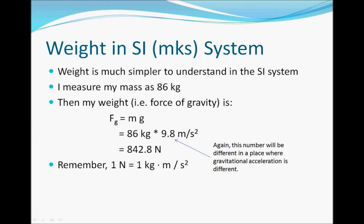In the SI, everything is a bit simpler, partly because it uses kilograms for mass and newtons for weight, which makes it easier to keep them separate rather than using the same word for both. If I measure my mass as 86 kilograms, I simply multiply by gravitational acceleration: 86 kilograms times 9.8 meters per second squared equals 842.8 newtons. There's no need for an extra unit conversion step, because the newton is defined to be a kilogram times a meter per second squared. So that takes care of the confusing difference between mass and weight, combined with the difference between pounds force and pounds mass.